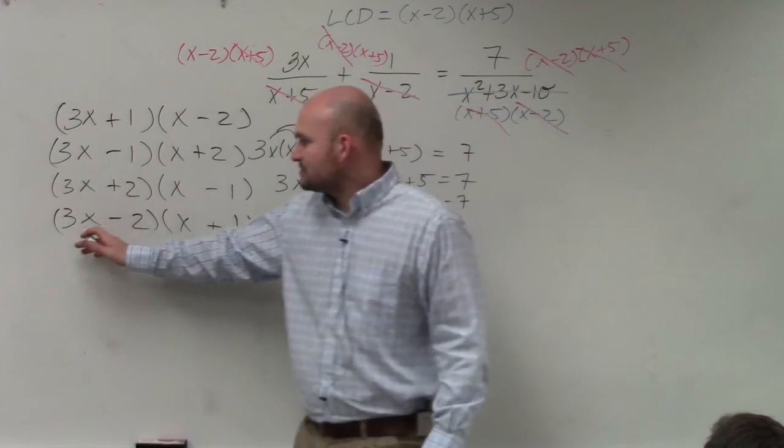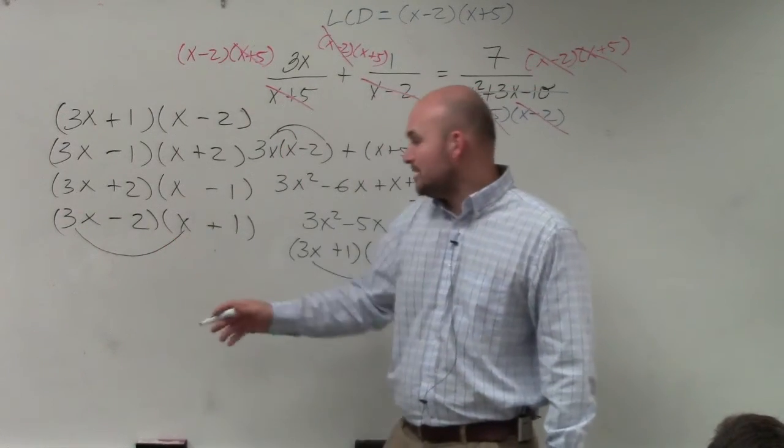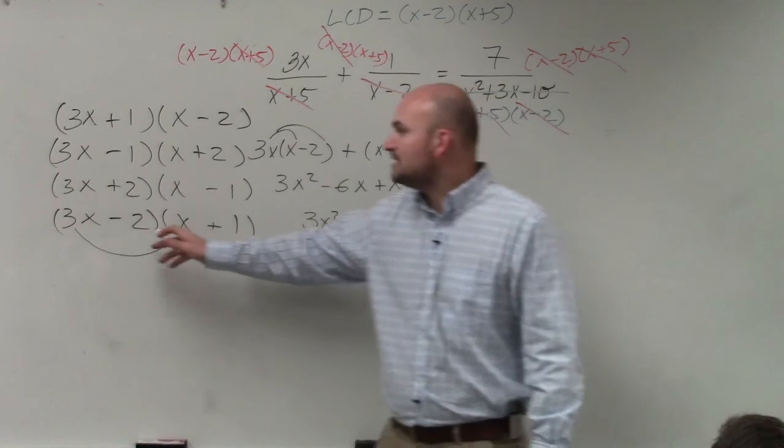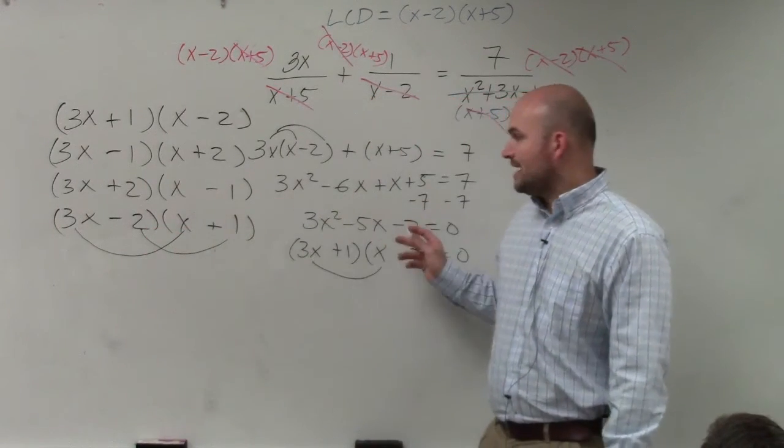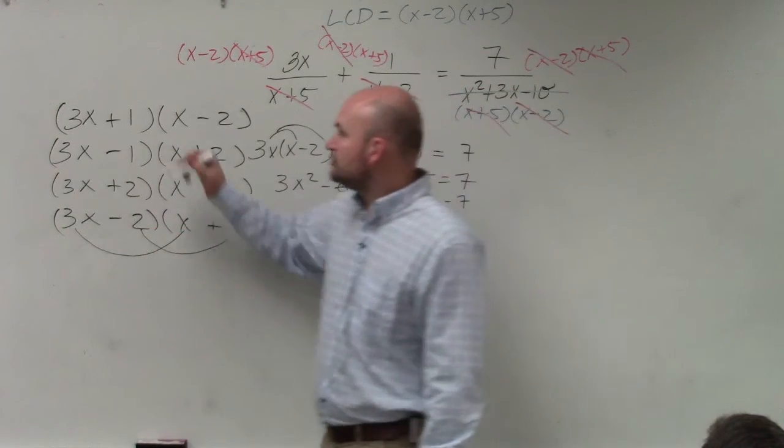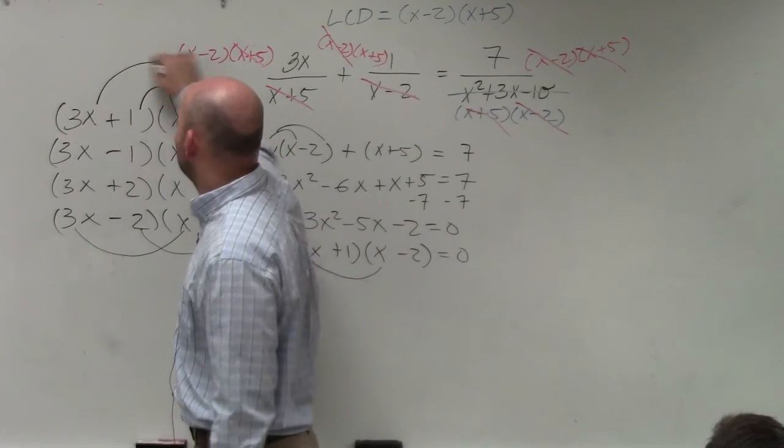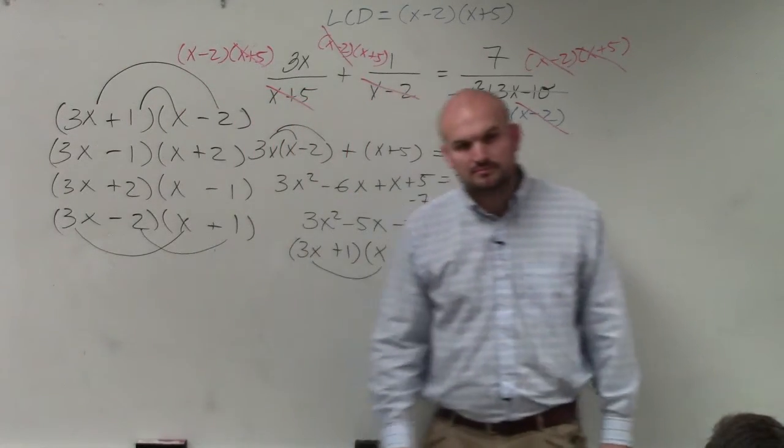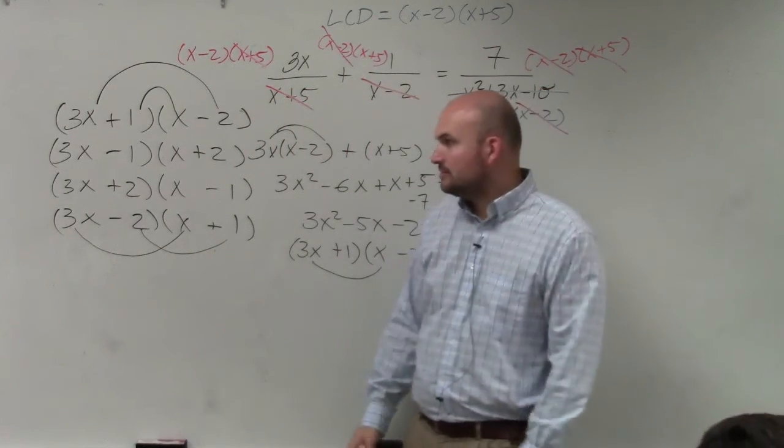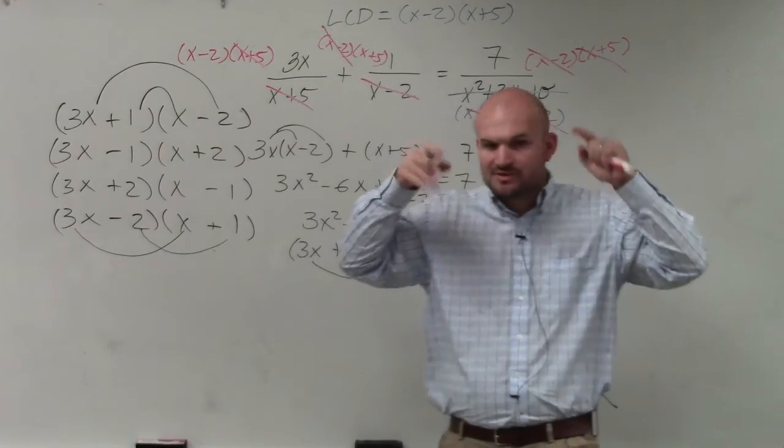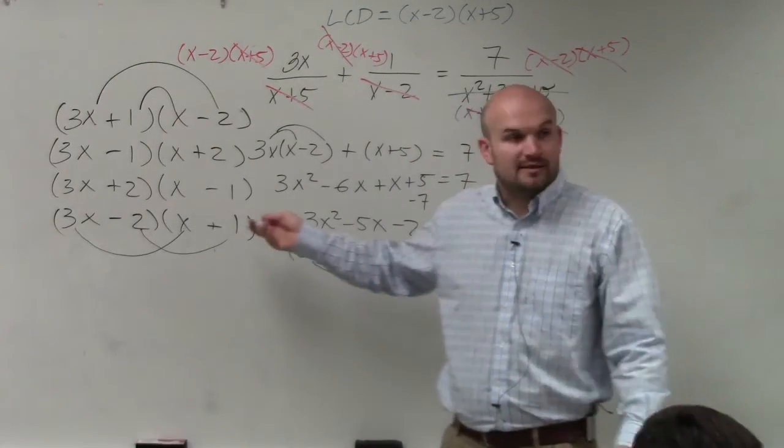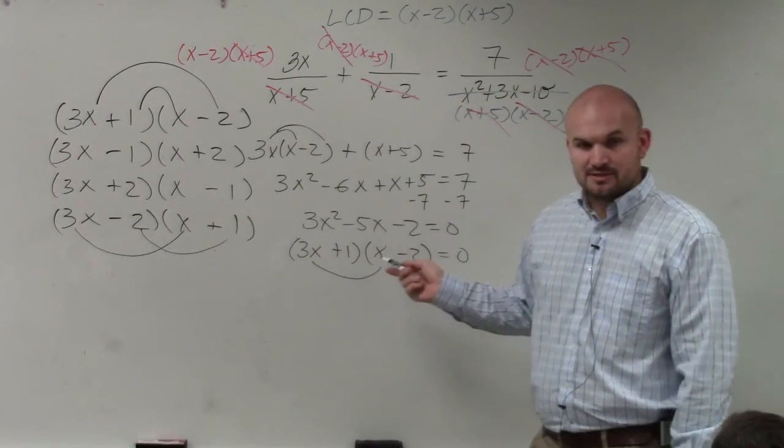The main important thing is when you're doing this, is you check the first two numbers have to give you 3x squared. The last two numbers have to give you negative 2. And then all you do in your head is you combine the outer and the inner. I'm just juggling all those numbers in my head, and that's why, Brandon, I can come up with that as my answer.